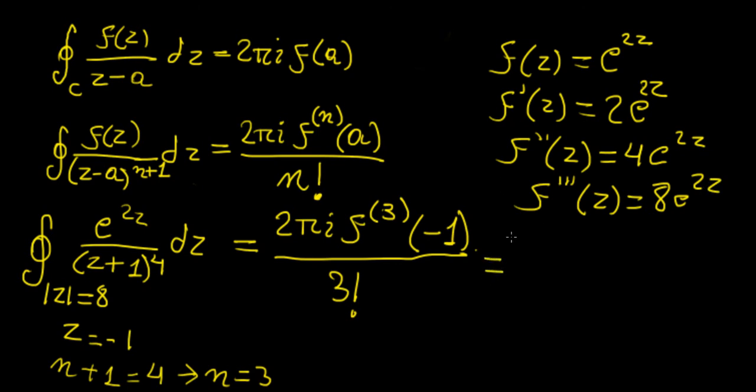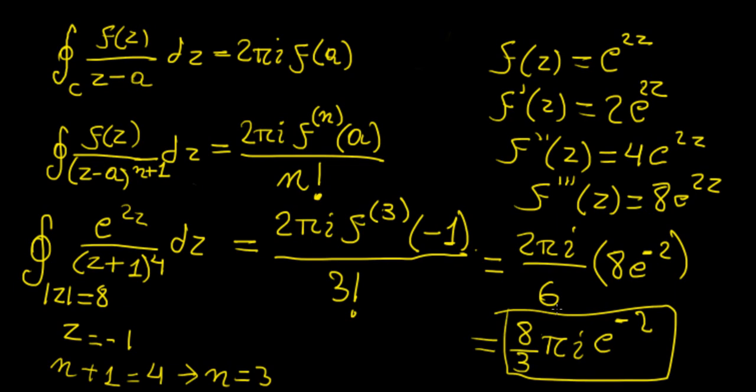So if we plug that in here, we're going to get 2πi over 6 times the function evaluated at minus 1, so we have 8e^(-2). That's the value we have there, and we can essentially leave it as that. Obviously we can simplify this further, so let's have 8/3 πi e^(-2). So let's leave our answer in exact form. This is going to be the value of this integral.